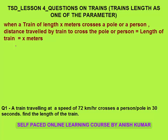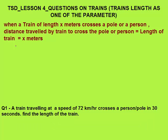For this purpose I have taken the help of YouTube — I will show you in this lesson some YouTube video which will make your concept absolutely clear. The first concept is that when a train of length x meters crosses a pole or a person, the distance travelled by the train to cross the pole is equal to the length of the train. Let's see a video.